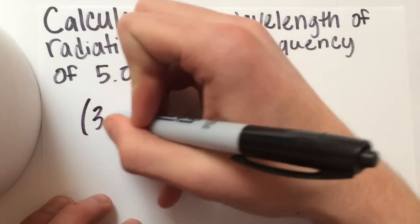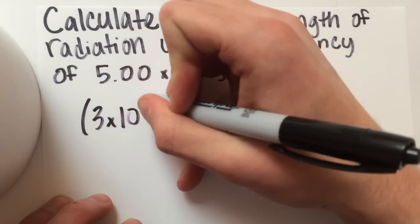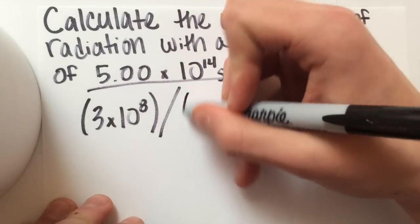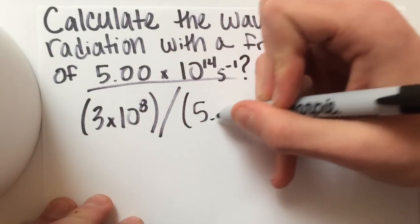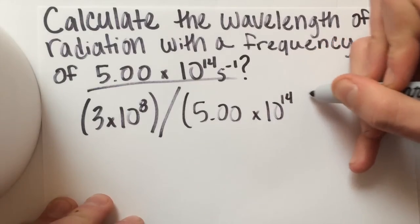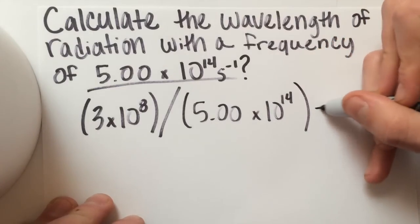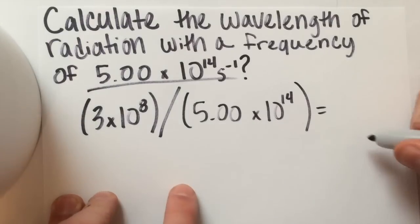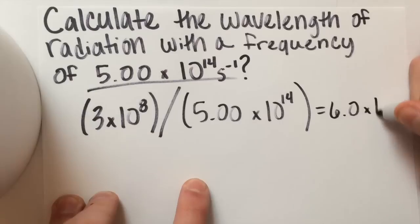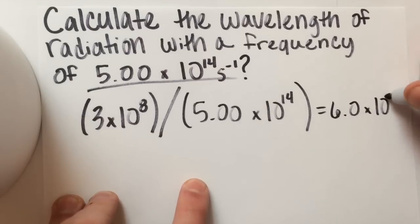So 3 times 10 to the 8th divided by your frequency, 5.00 times 10 to the 14th. And that's going to leave you with 6.0 times 10 to the negative 7th meters.